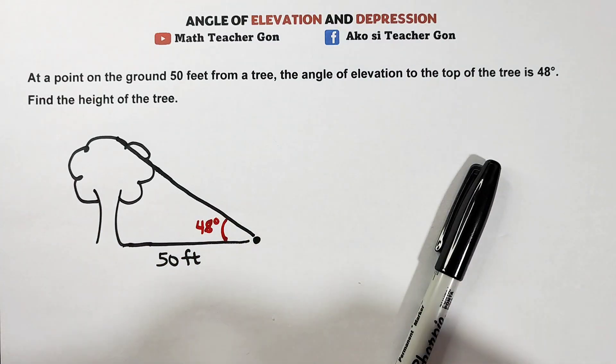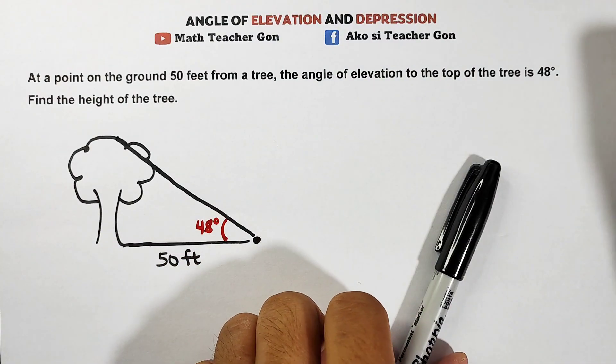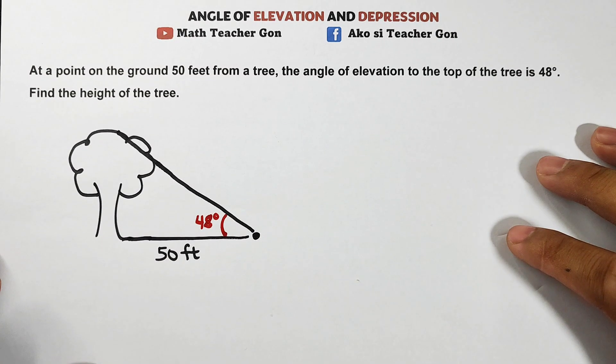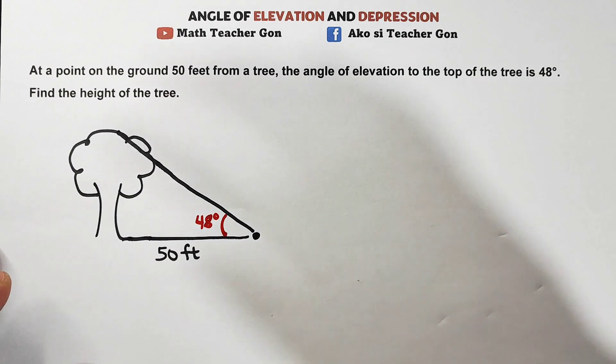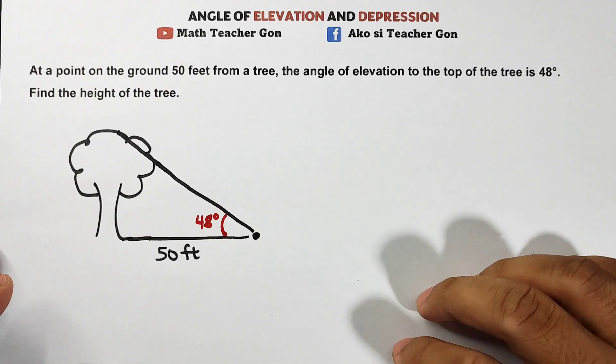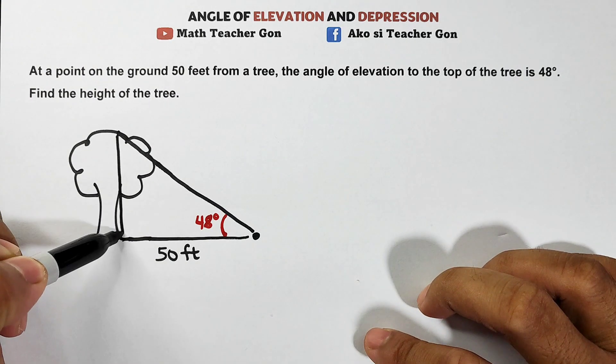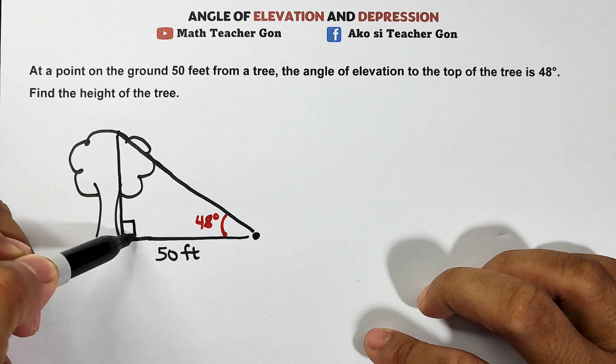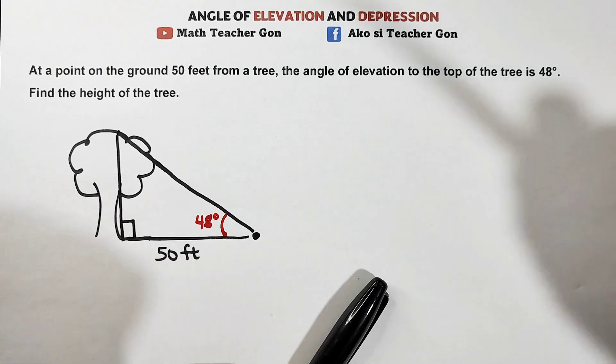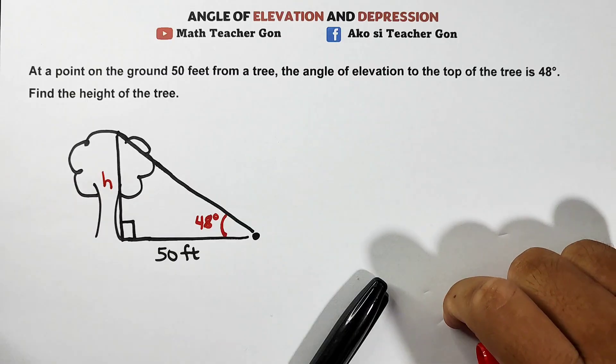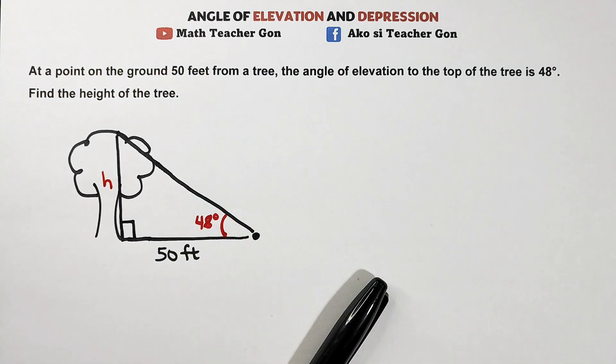Now the question is, find the height of the tree. So what will happen here guys, whenever you are dealing with angle of elevation and depression, you need to imagine or reimagine a right triangle. From this point, let's make a right triangle. And this is what we're looking for, we are trying to calculate the height of the tree. Now how are we going to solve this kind of problem?